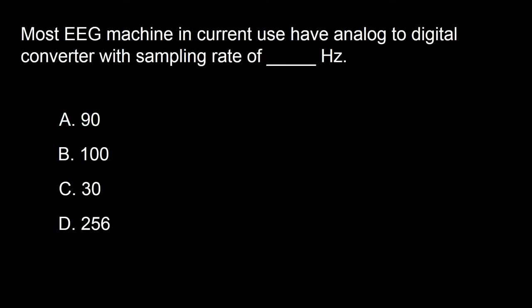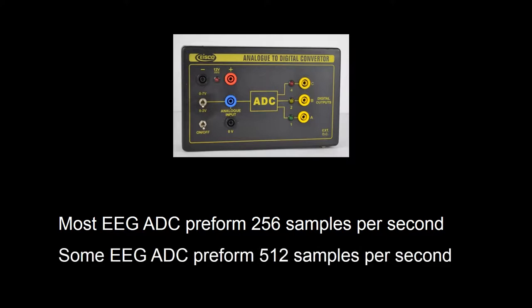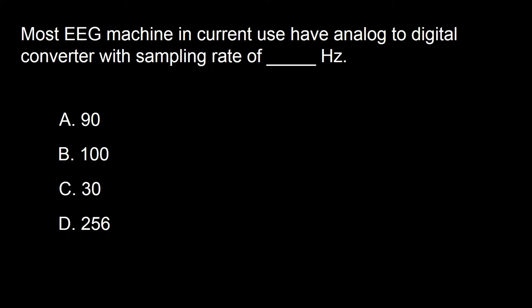Next question: most EEG machines in current use have analog-to-digital converters with sampling rates of dash hertz. A: 90, B: 100, C: 30, D: 256. Most analog-to-digital converters have a sampling rate of 256 samples per second; some take as many as 512 samples per second. The answer is D.